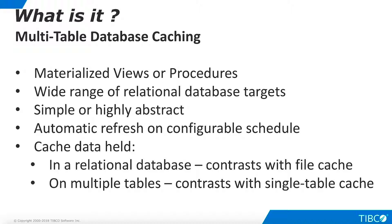Single-table caching stores cache data in one relational table. This contrasts with multi-table caching, which uses a group of tables in round-robin fashion when the cache is refreshed. Multi-table caching can be useful when indexing is heavily used, because it reduces the time needed for index maintenance as expired data is deleted. However, multi-table caching uses more resources on the cache target.